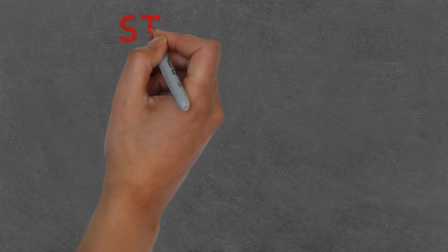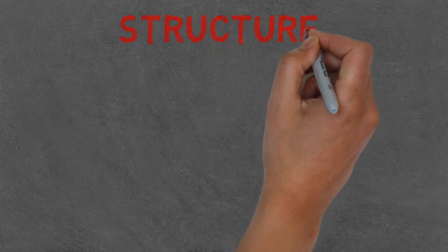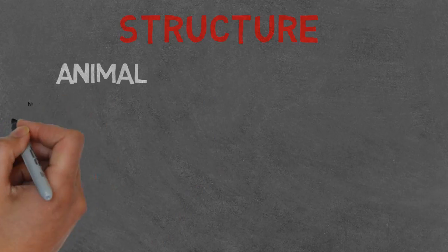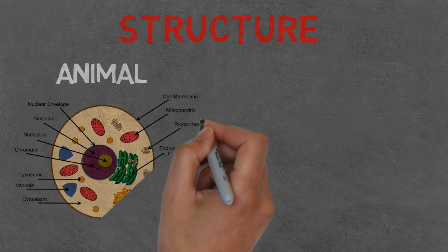The structure. Animal and plant cells both have a nucleus, which is where the cell's DNA is located. Cytoplasm, the space inside the cell.